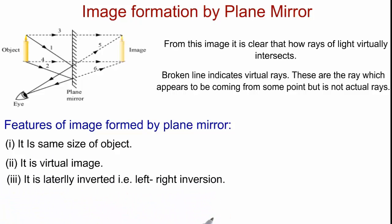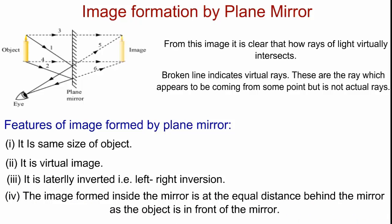Now, let us revise some features of image formation by a plane mirror. Image formed is same size of object. It is a virtual image. It is laterally inverted and the image formed inside the mirror is at the equal distance as the object is in front of the mirror.